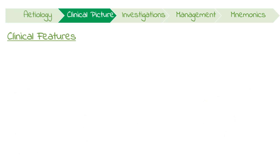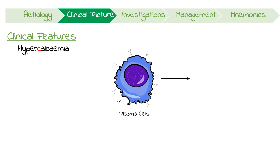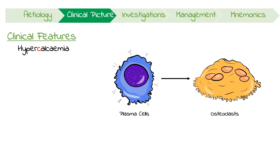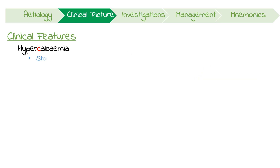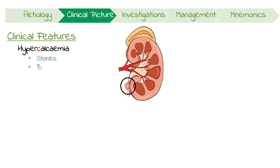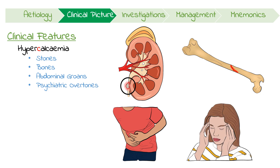As mentioned before, myeloma can present with CRAB features. Hypercalcemia occurs because plasma cells produce cytokines activating osteoclasts. The resulting bone resorption causes the release of calcium. Remember that hypercalcemia causes patients to have stones, bones, abdominal groans and psychiatric overtones.